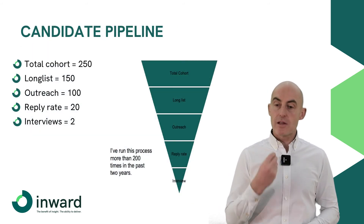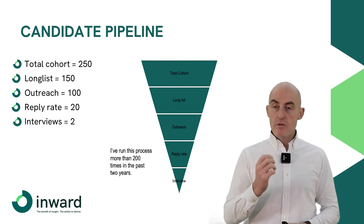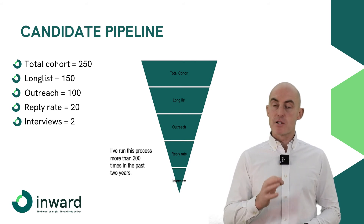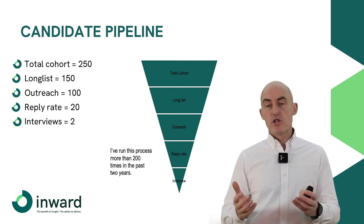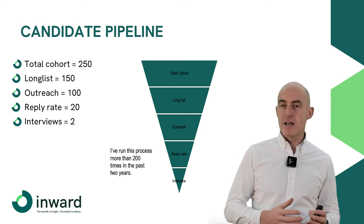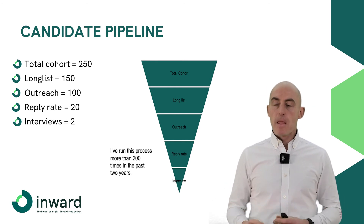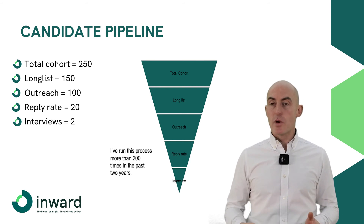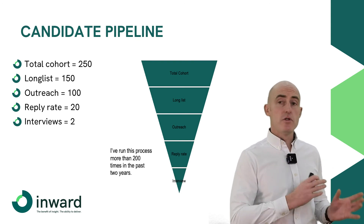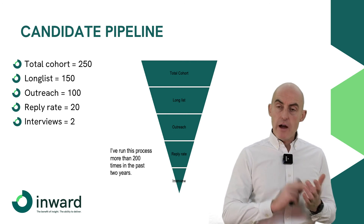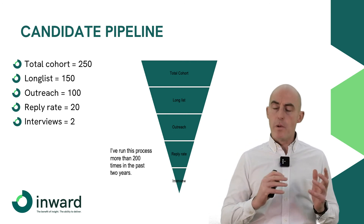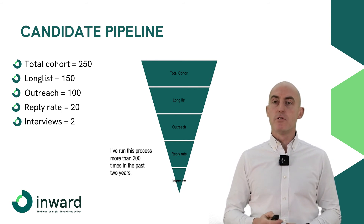The reason that's important is when you look at the candidate pipeline — and I've run this process more than 200 times — you need a total cohort of at least 250 prospect candidates to reach out to. You'll shortlist 100 of them into a long list, reach out to about 100 because some won't accept InMails and you won't get their email addresses. Your reply rate will be about 20%, and out of that 20% you're going to end up with two interviews. If all this is done right, out of those two interviews you'll fill your job. But if the shaded area in the middle doesn't have 250 people in it, you are just hoping to find the right candidate and you will still be recruiting in six months.